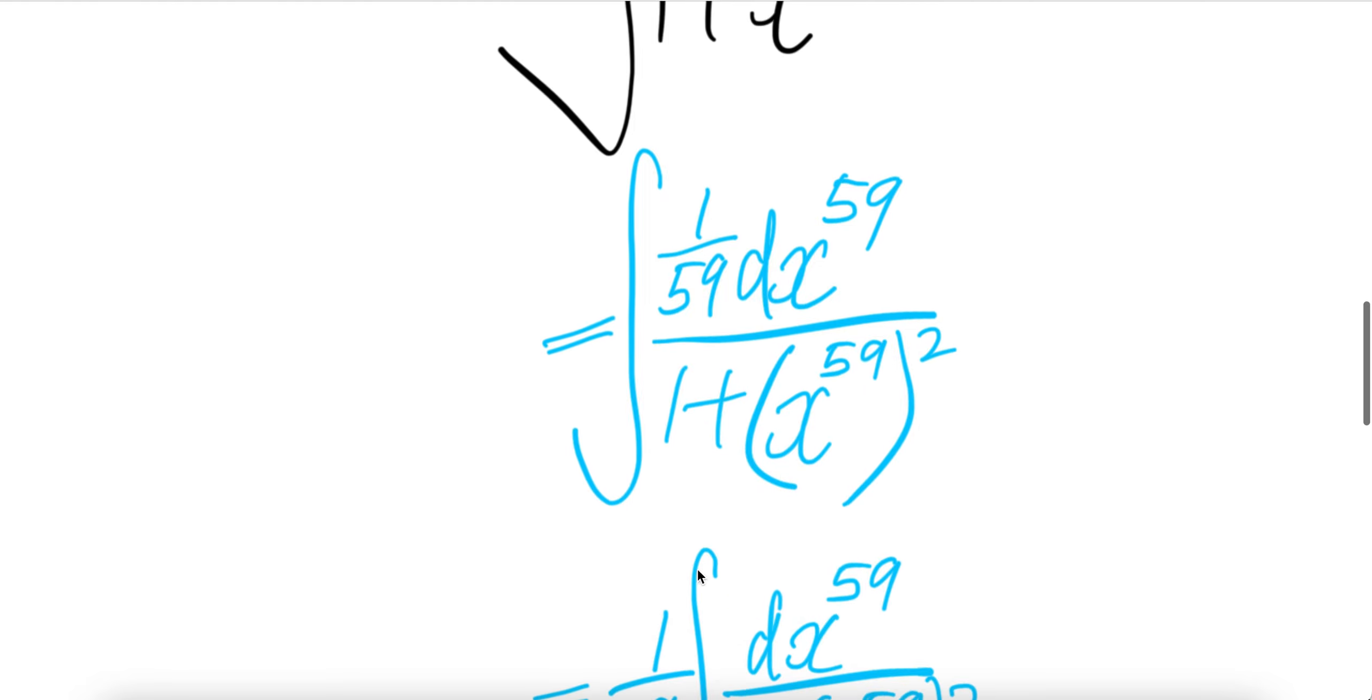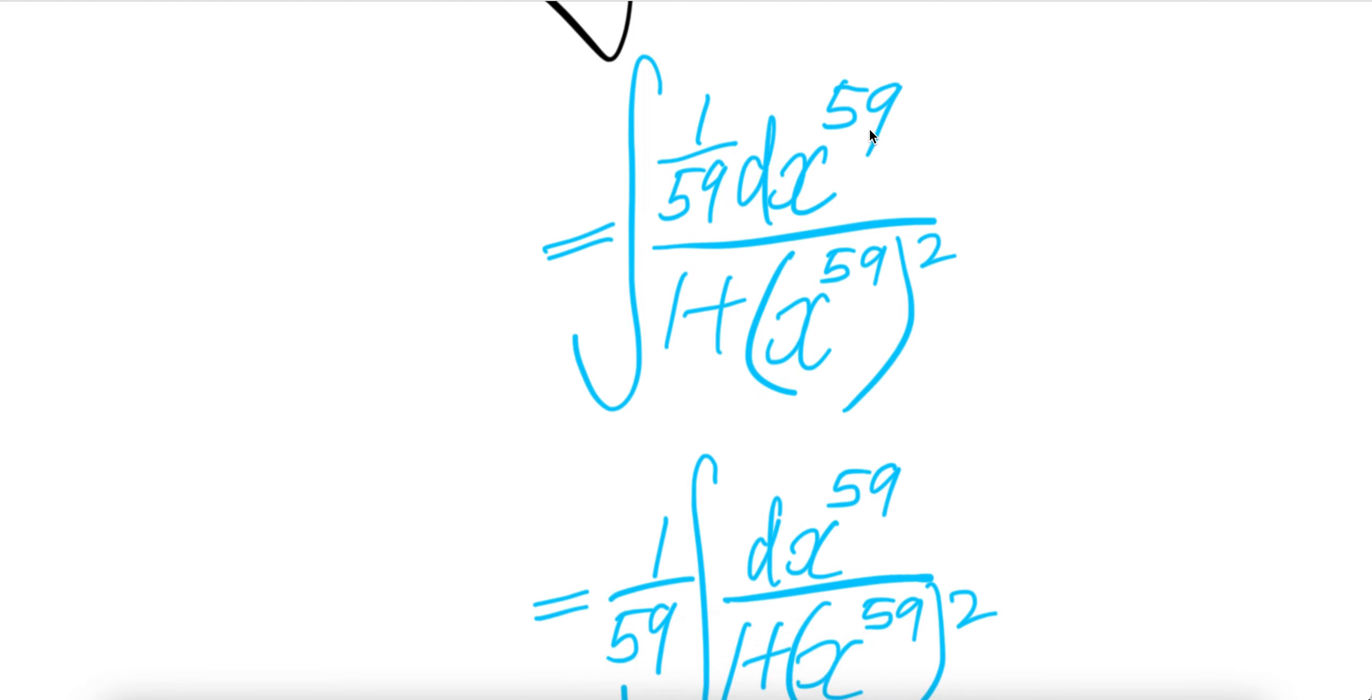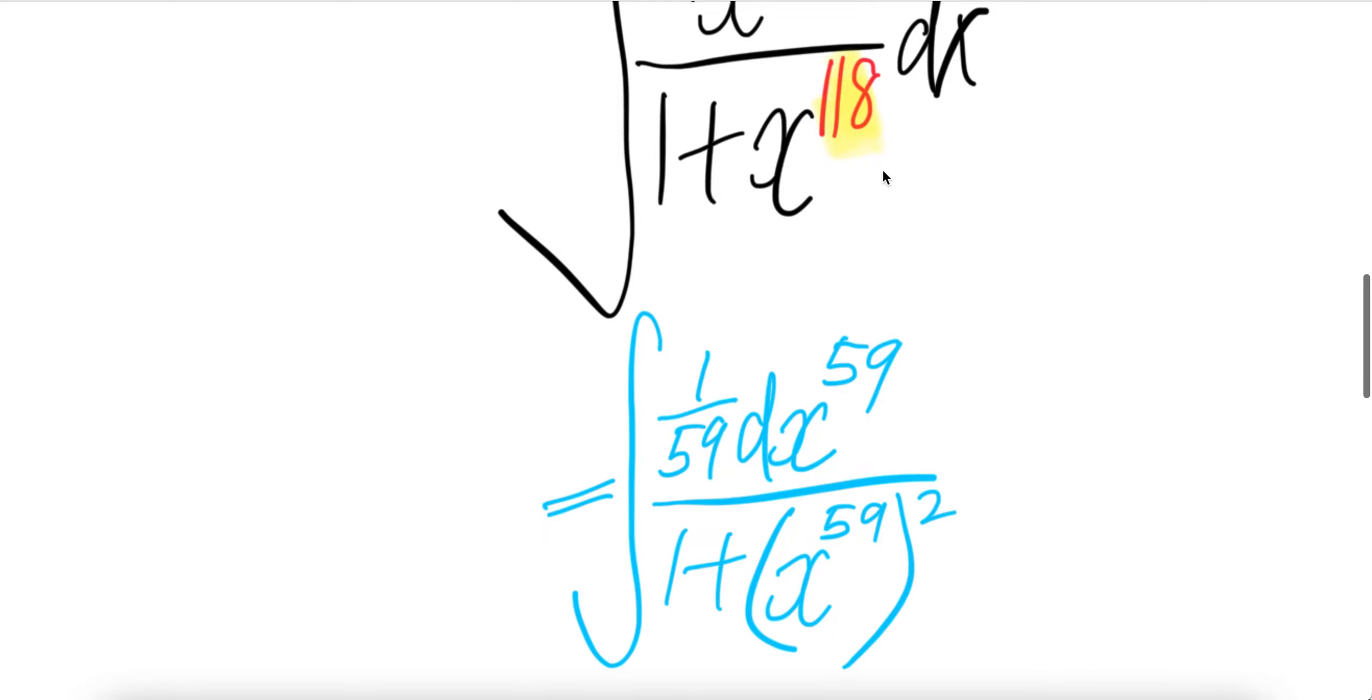1 over 59 out of the integral and then you're left with dx to the power of 59. Now let us write this as x to the power of 59 squared.